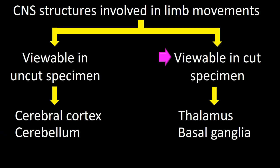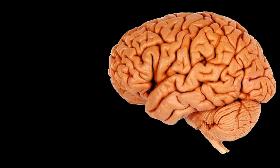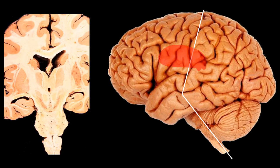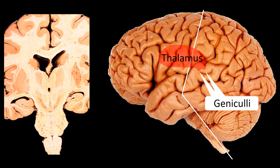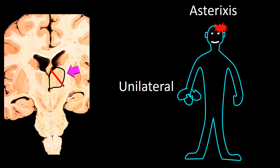After the cerebellum, we will talk about structures only viewable in the cut specimen. A view of the left hemisphere is shown, with the thalamus identified by the geniculi. The arrow in the cut specimen points to the thalamus. Unilateral thalamic lesions are the most frequent cause of unilateral asterixis.